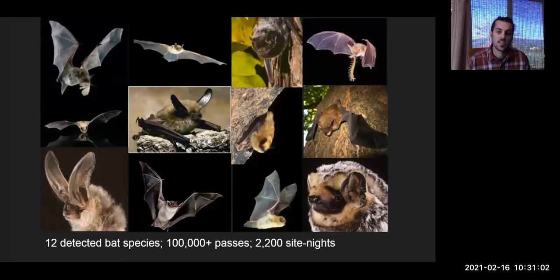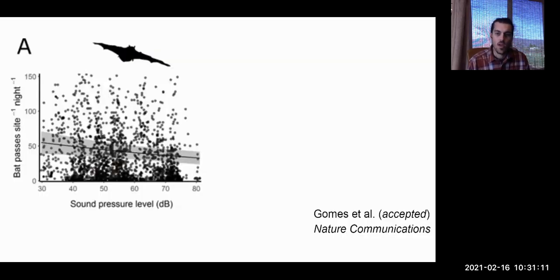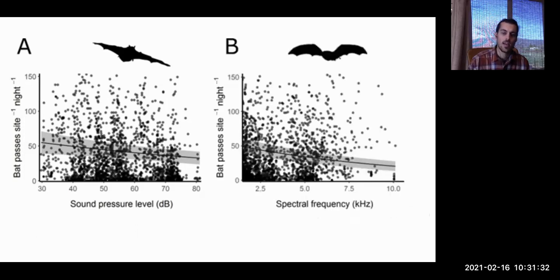For bats, there were 12 species detected in 100,000 identified bat passes from about 2,200 site nights. We see a similar relationship between activity and sound levels as we do for birds. As it gets louder, there are relatively fewer bats. Bat activity decreases about 8% every 12 dB - about 7% for birds along a similar gradient. As the frequency of noise gets louder, we also see fewer bats. While bat echolocation calls are high frequency, this pattern isn't likely due to masking because echolocation signals are so much higher frequency than the noise here. But these bats do hear better at higher frequencies and so higher frequency noise might be perceived as louder as well, which could contribute to this pattern.